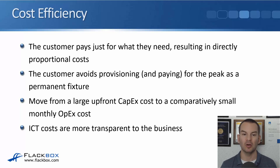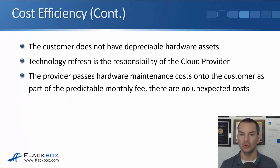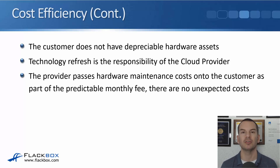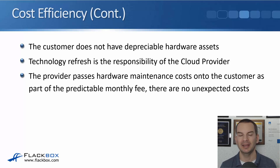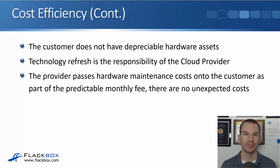Your ICT costs are more transparent and manageable to the business as a fixed monthly cost. You also do not have depreciable hardware assets. With on-premises, you buy the latest hardware now, but a few years down the line it's out of date, depreciated, and you face another big upfront capex cost for a technology refresh. With cloud, the provider passes hardware maintenance costs to the customer as part of that predictable monthly fee, with no unexpected costs.